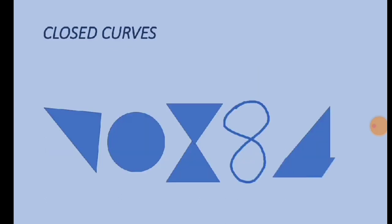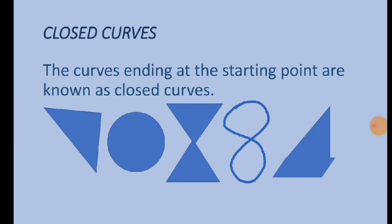Closed curves: The curves ending at the starting point are known as closed curves. That means the figures that start and end at the same point are closed curves. Examples of closed curves are triangle, circle, or any closed figure.